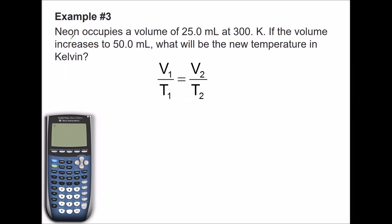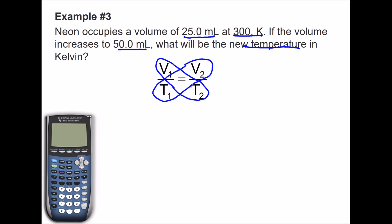Example number three: neon occupies a volume of 25.0 liters at 300 Kelvin. If the volume is increased to 50 milliliters, what is the new temperature? We cross multiply again to avoid fraction algebra mistakes: V1 times T2 equals V2 times T1. Listing variables: V1, T1, V2, and T2.